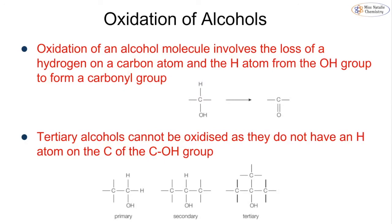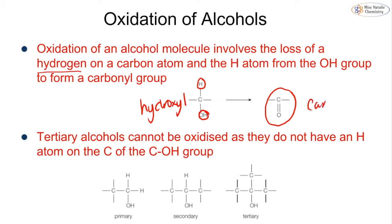One of the most important parts of this topic is the oxidation of alcohols. This will come up in units two and three as it is also a core practical, and you will come back to it in units four and five at A2 as well. The oxidation of an alcohol molecule involves the loss of a hydrogen attached to a carbon atom and the hydrogen atom on the OH group, and we form a carbonyl group — a carbon double bonded to an oxygen. It's very important to distinguish between the hydroxyl group and this carbonyl group.